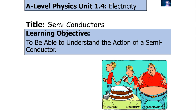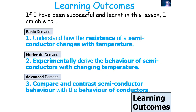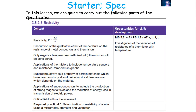We're going to be focusing on the following key ideas: understanding how the resistance and the resistivity of a semiconductor can change with both temperature and light intensity, and then compare and contrast the behaviour of semiconductors with the behaviour of conductors. This links in to the AQA A-level physics specification, sitting under the topic of resistivity, where you've got to consider the resistivity of thermistors and LDRs.